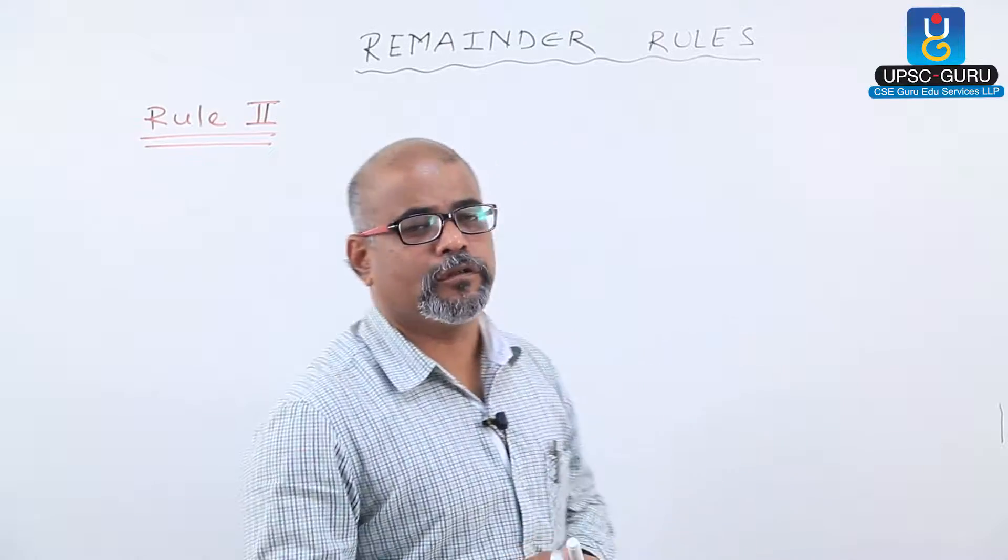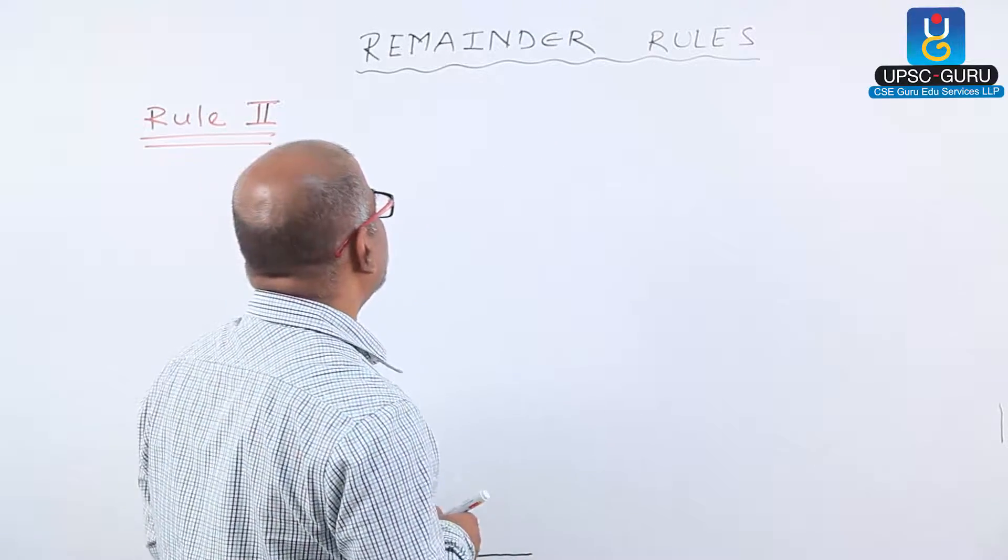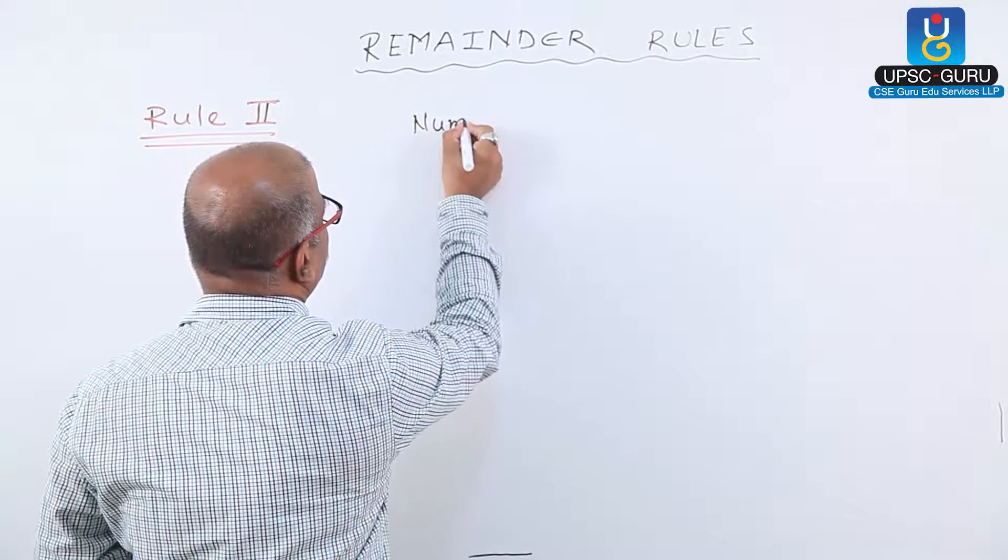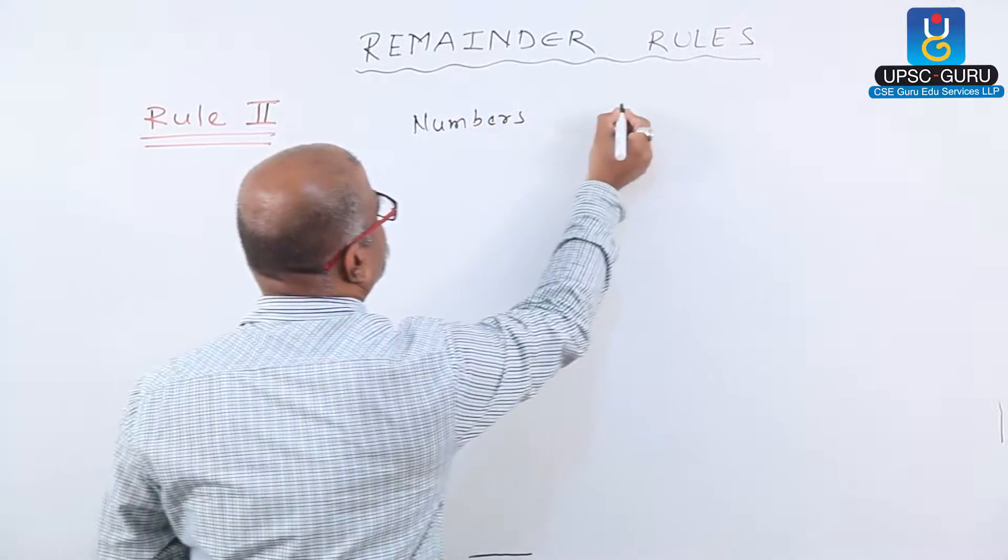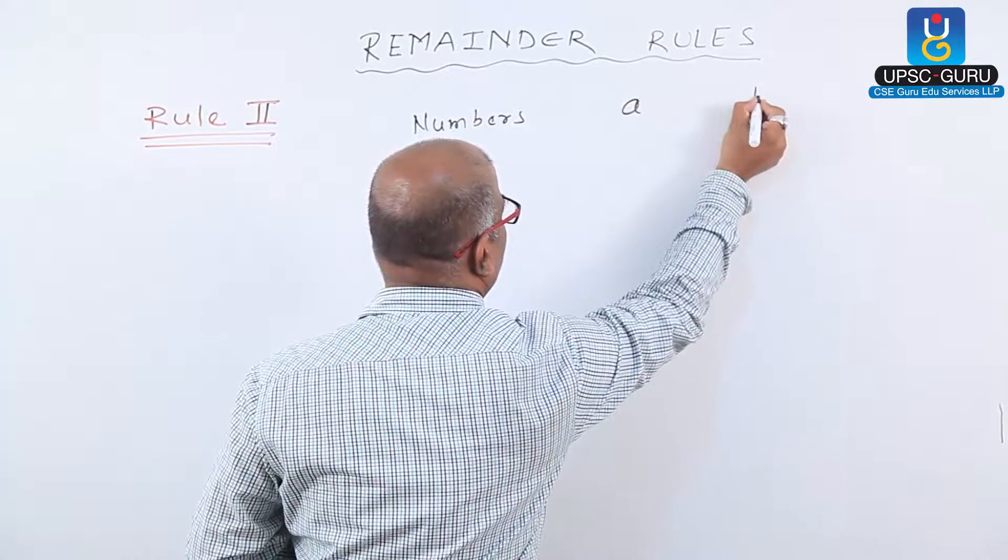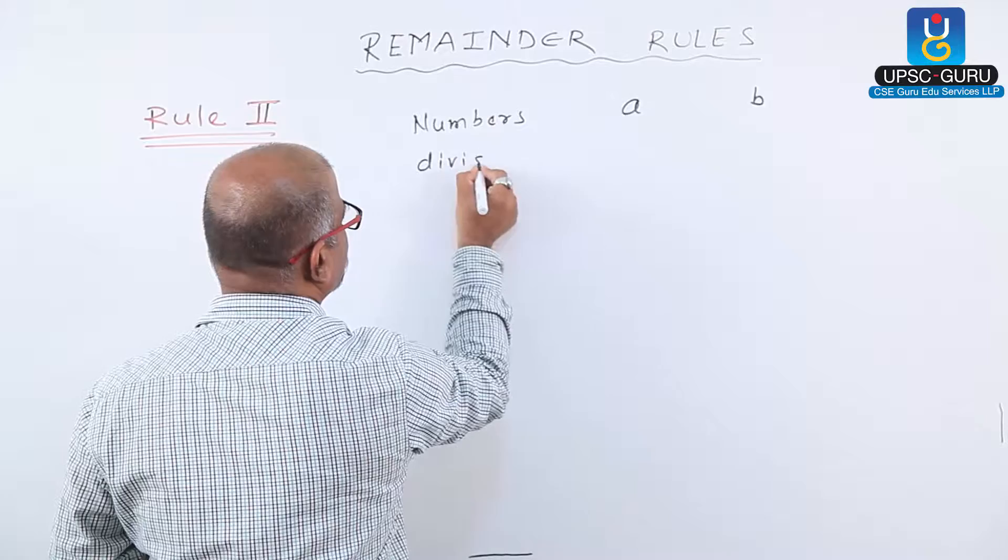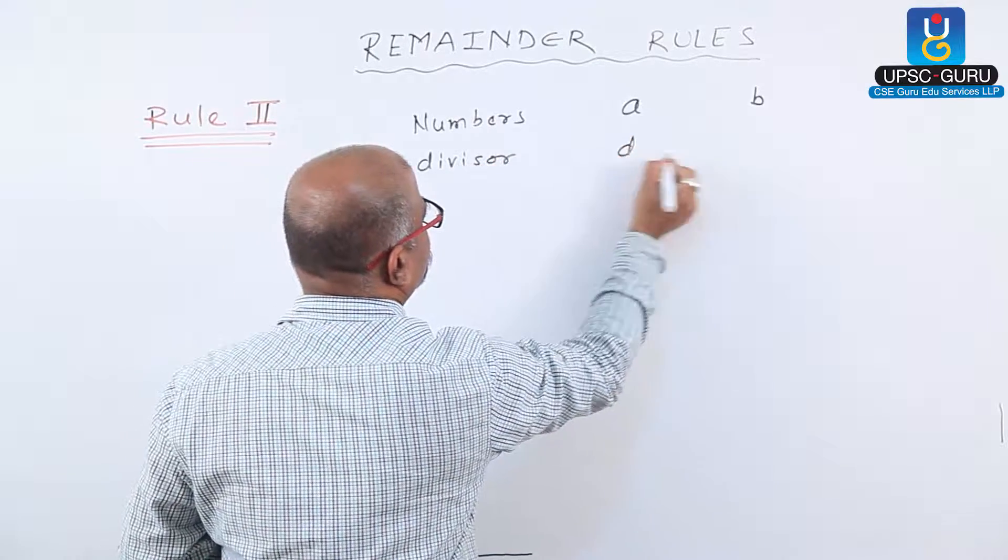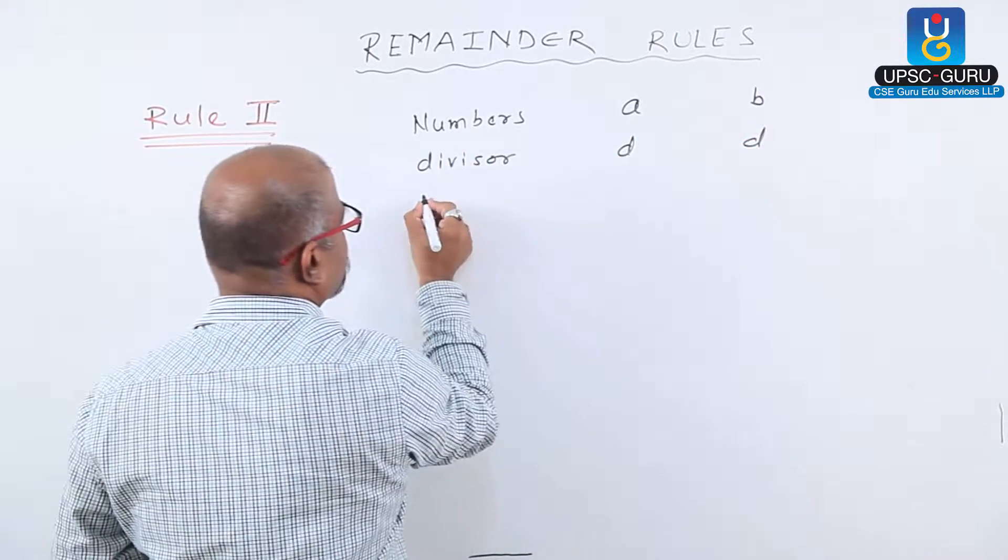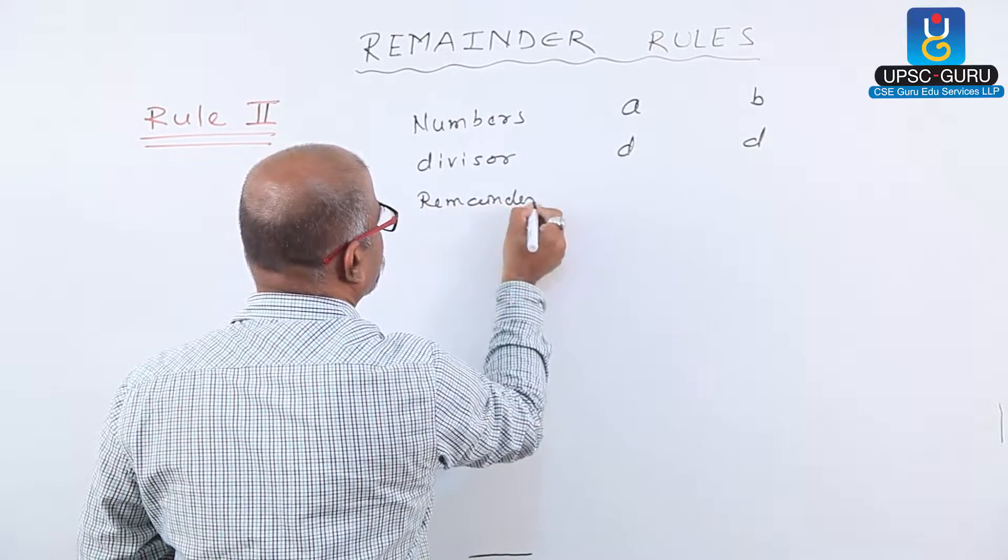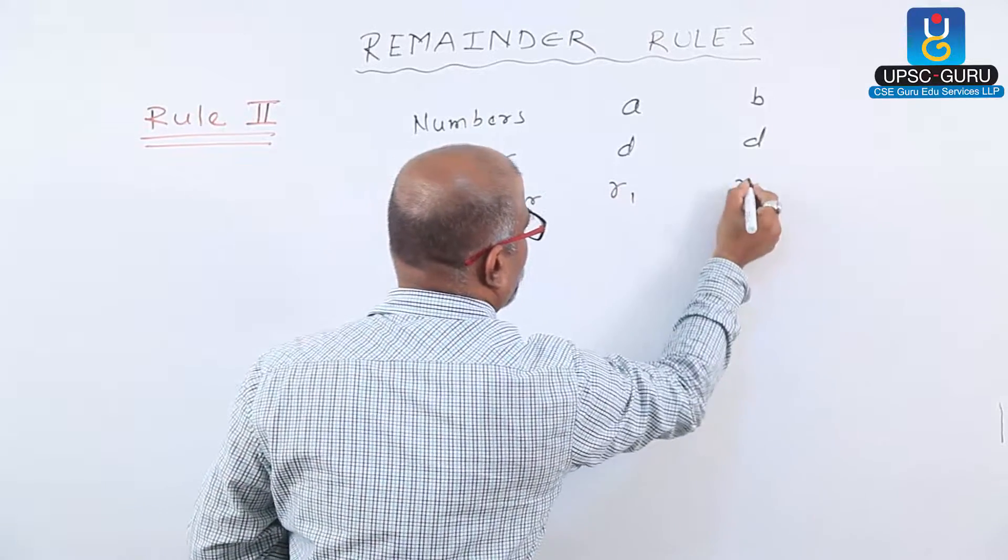Reminder rule number two. In this case, if two different numbers—let us consider numbers A and B—are divided by the same divisor, they give us remainders R1 and R2.